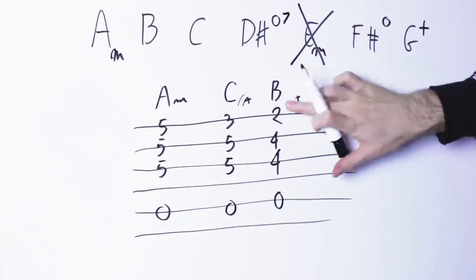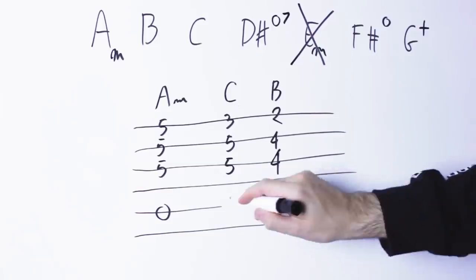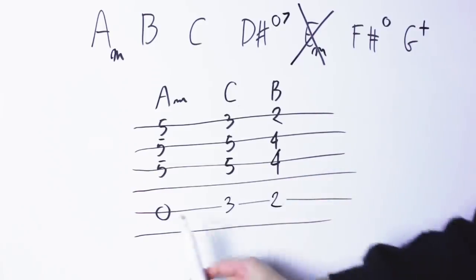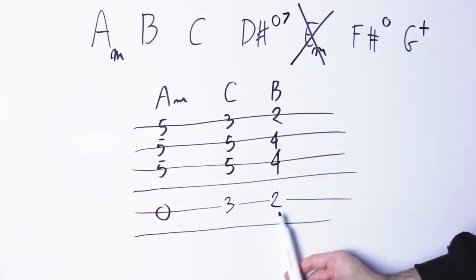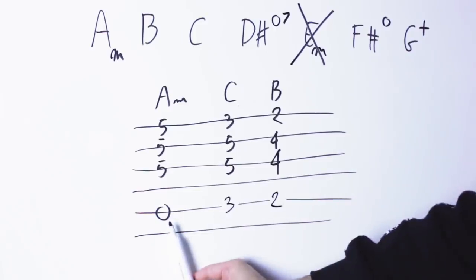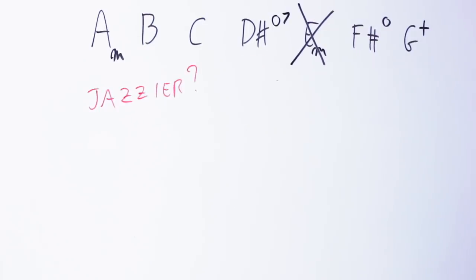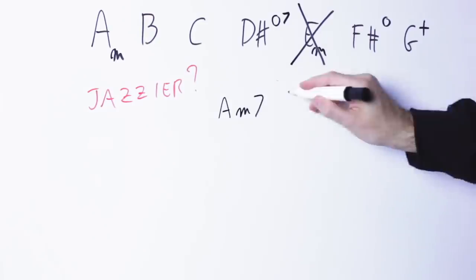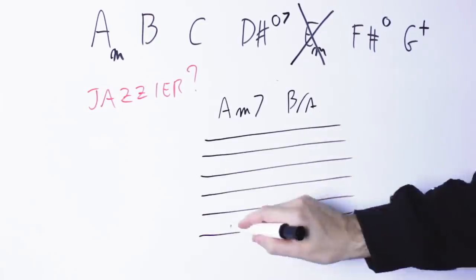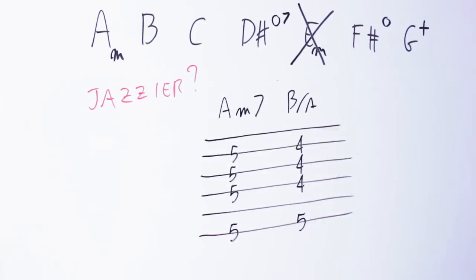I don't have to keep the bass on A and if I change the bass accordingly it sounds this way. This sounds all very dark and dramatic but what if I want to make this sound jazzier? Well I could play an A minor seventh and then I could play my B slash A. Listen to that.